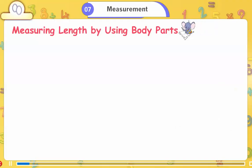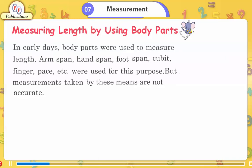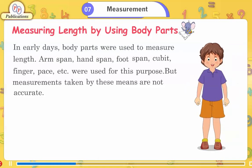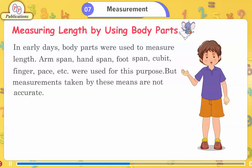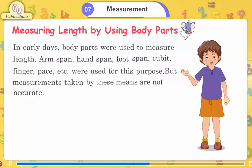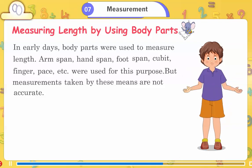Measuring Length by Using Body Parts. In early days, body parts were used to measure length — arm span, hand span, foot span, cubit, finger, pace, etc. were used for this purpose. But measurements taken by these means are not accurate.